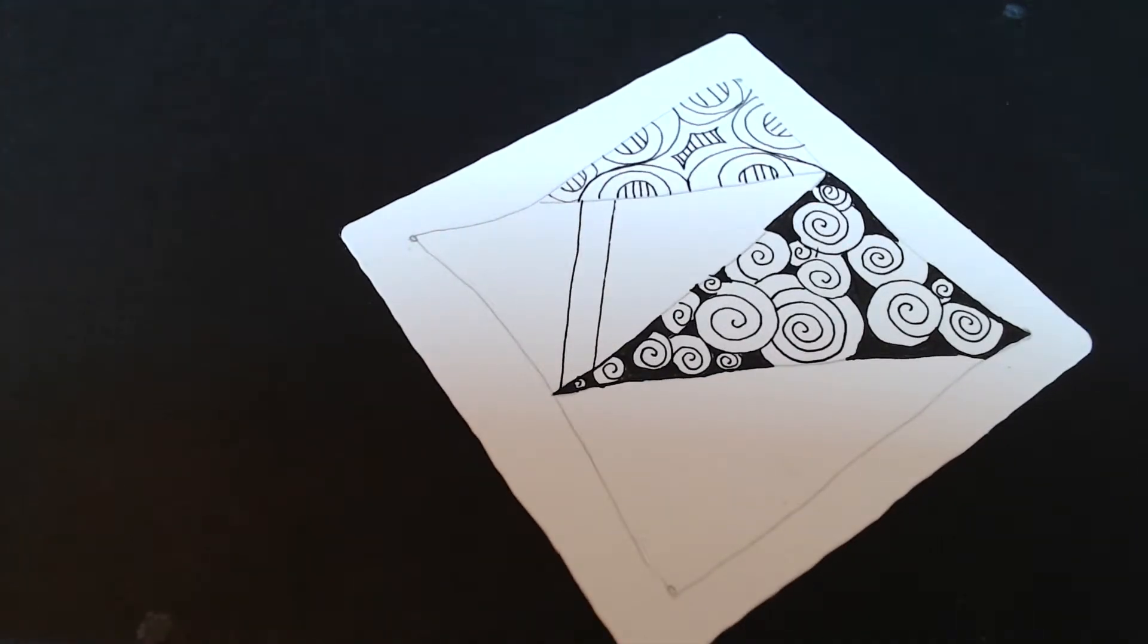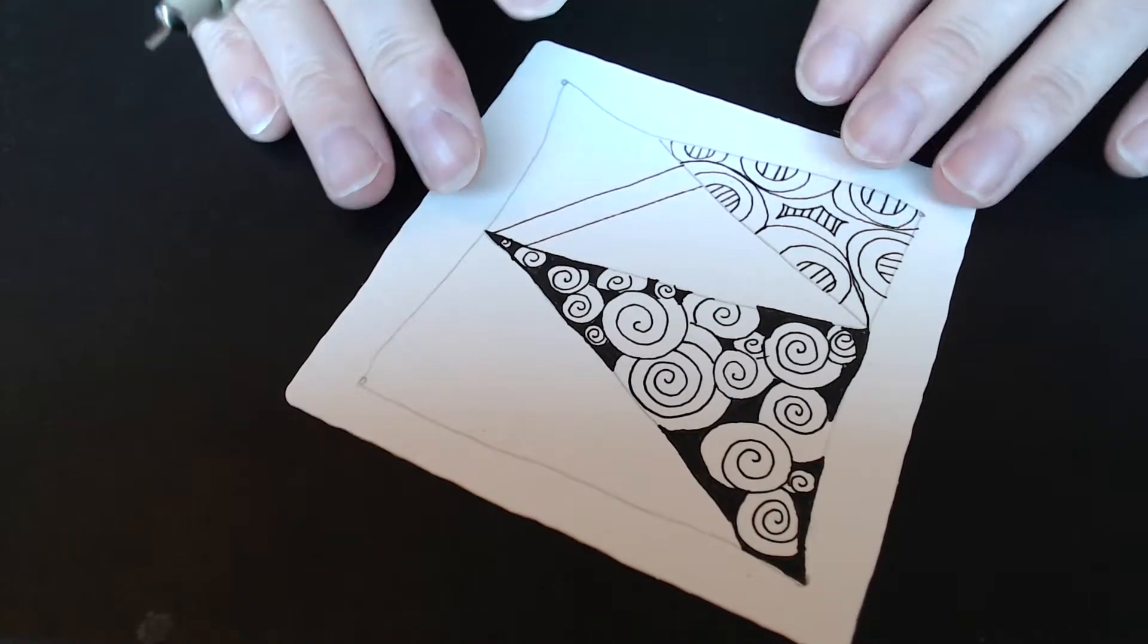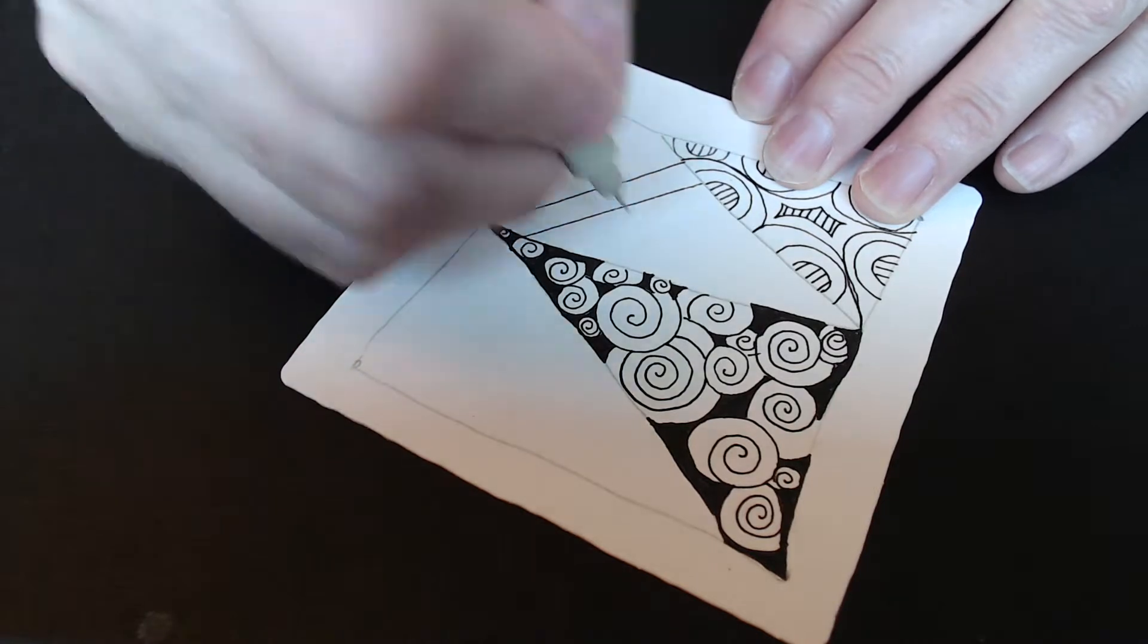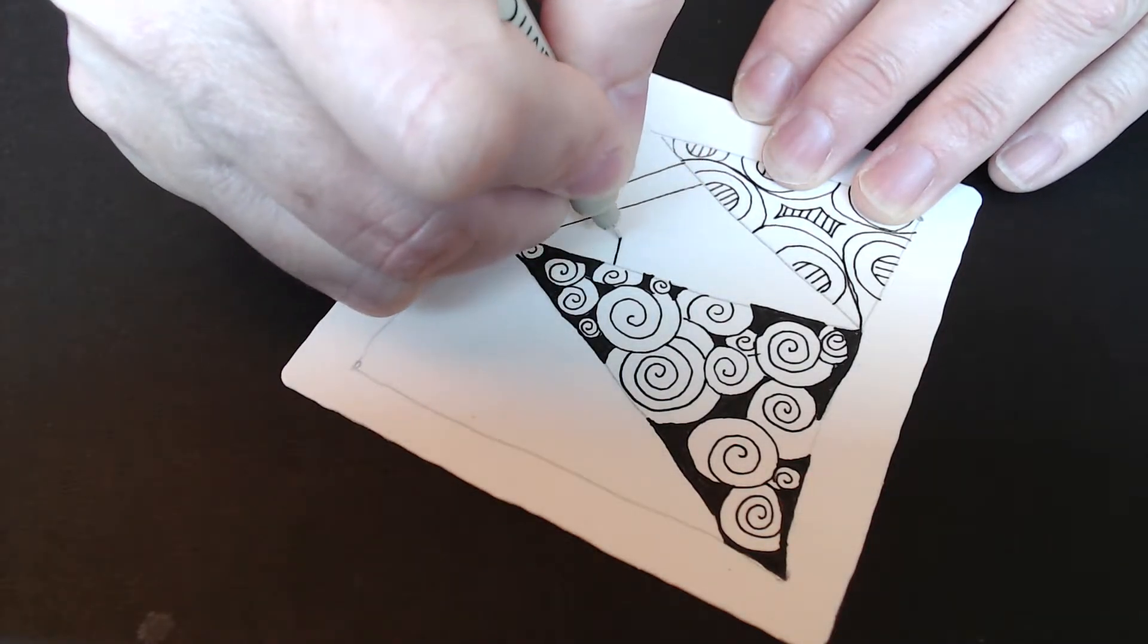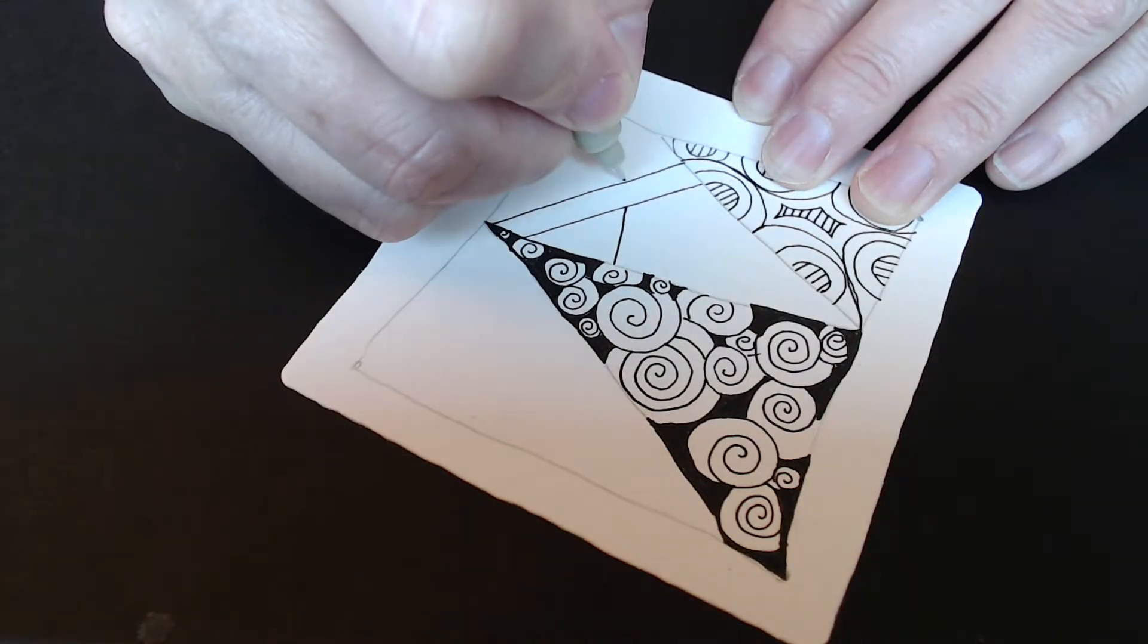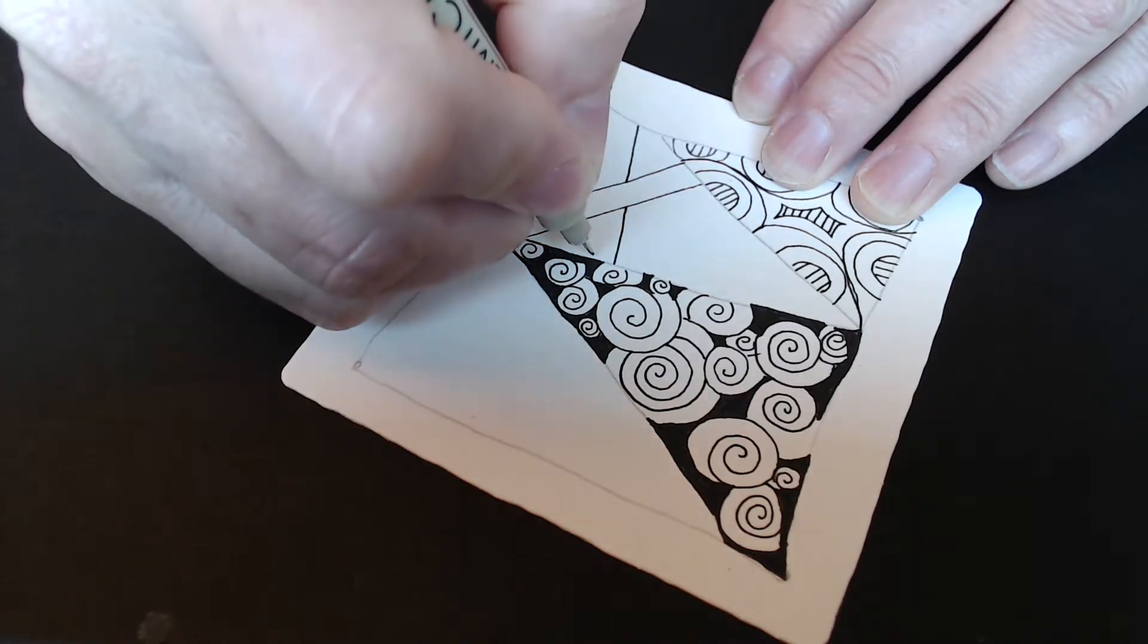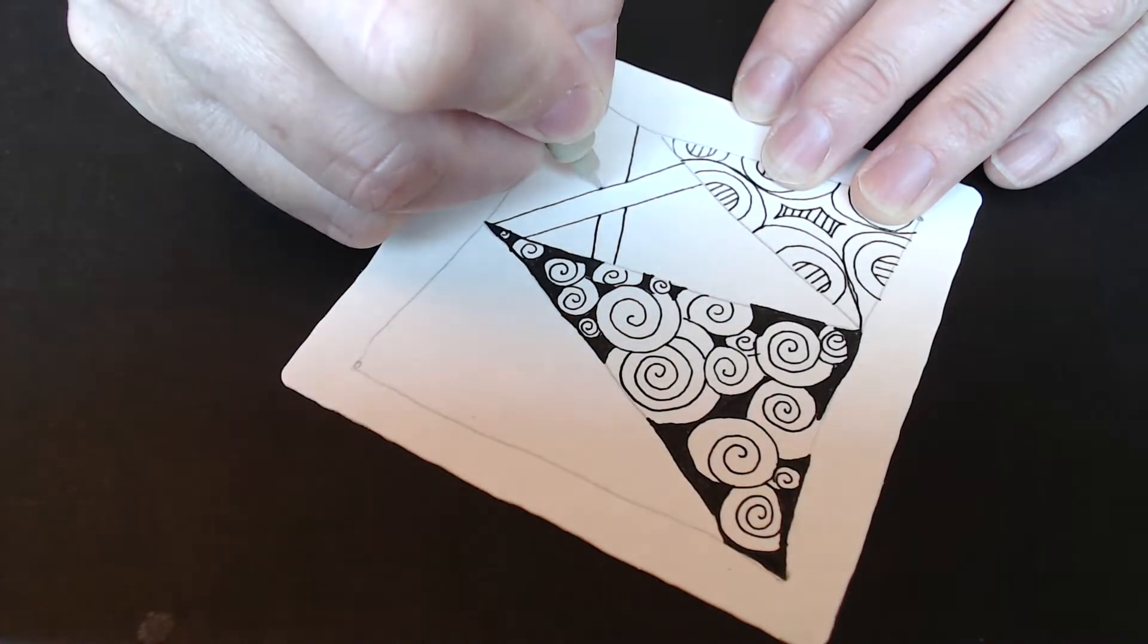Then I'm going to put a line going underneath that. Again, I'm rotating my card instead of my neck, it's much more comfortable. At another angle I'm going to put another line, and when I come to that plank or line I've just drawn I lift my pen. I continue on the other side.